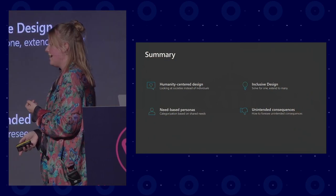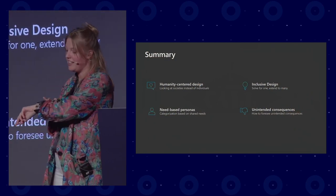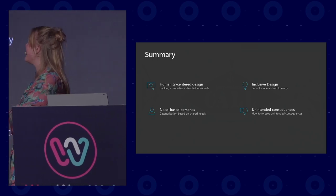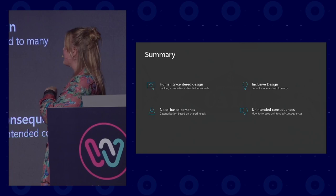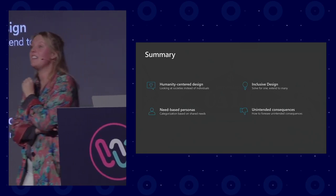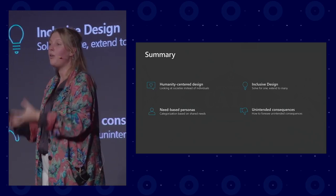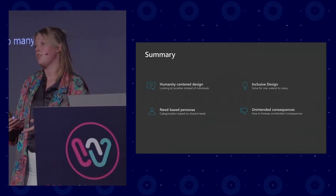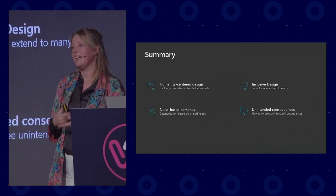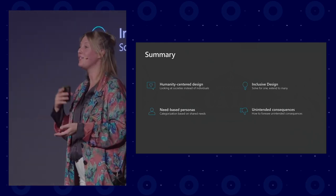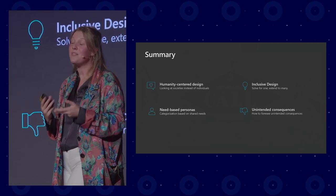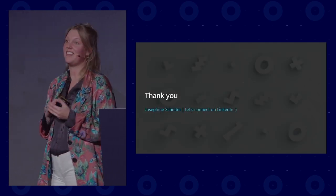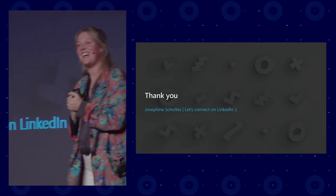So with that, we're at the summary. Today I highlighted four trending topics: humanity-centered design, inclusive design, need-based personas, and unintended consequences. We had a lot of discussion today about how to build interfaces, but these topics look at the process before that — why are we building what we're building and how do we get there. Hopefully this inspired you in some way; maybe your teams internally can use it to align and communicate. Thank you very much — let's connect on LinkedIn and talk tonight.